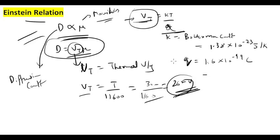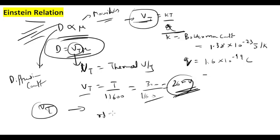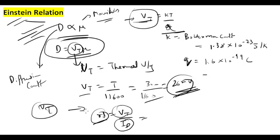The thermal voltage Vt is also important when finding dynamic resistance in diode analysis. Dynamic resistance is equal to Vt/Id, where Vt is the thermal voltage and Id is the current flowing through the diode. Therefore, the Einstein relation is important in that context as well.